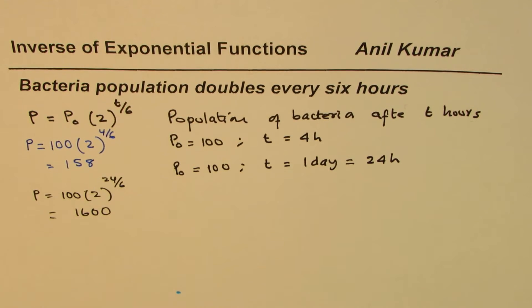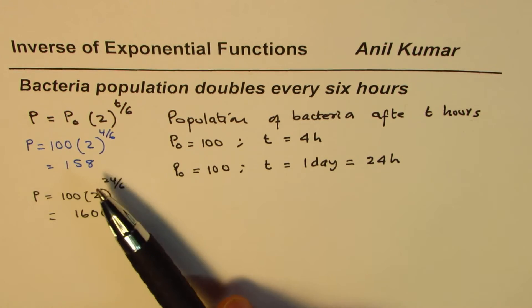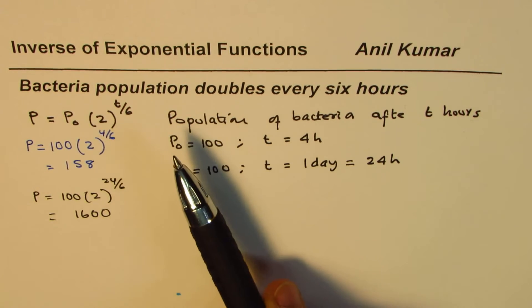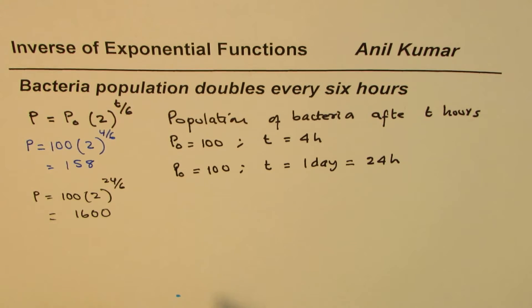And that gives us 1600. So we get a population which is 1600, so after a day the population of this bacteria is going to be 1600. So it is going to double four times in 24 hours.